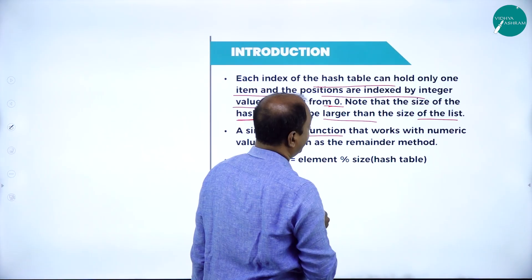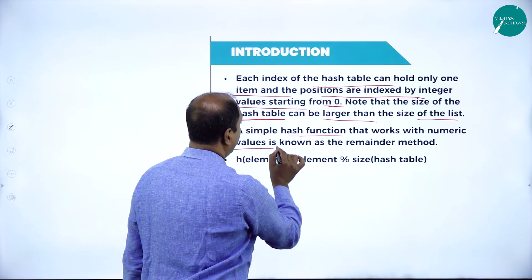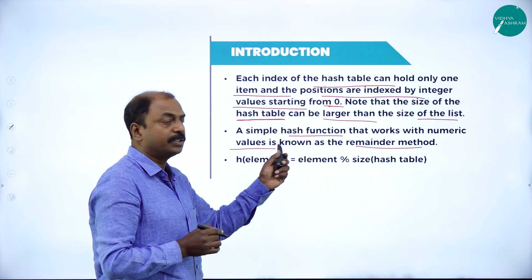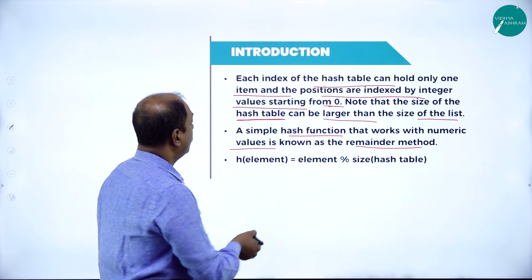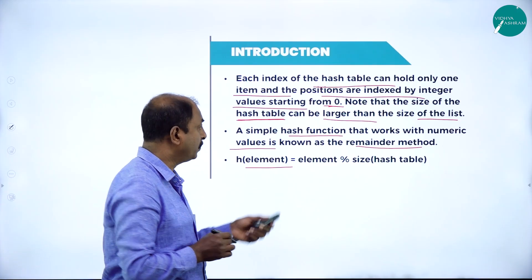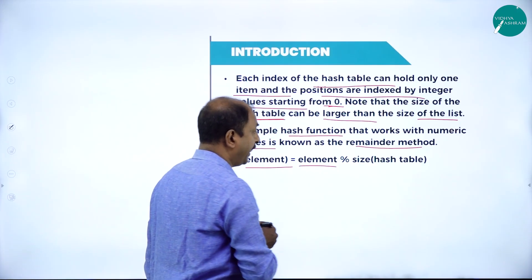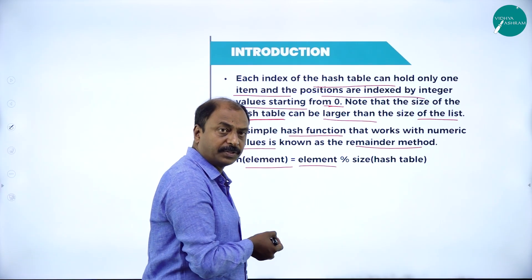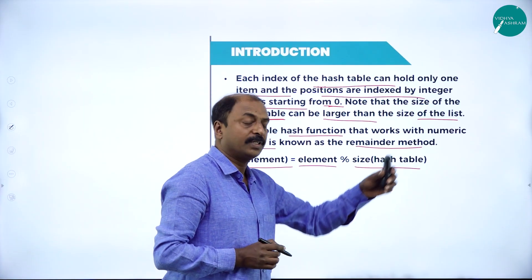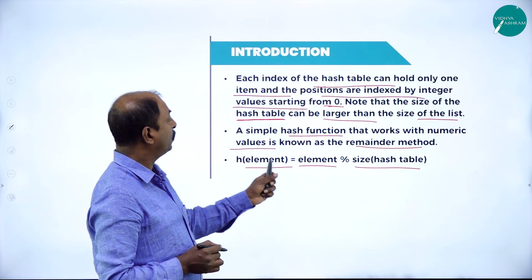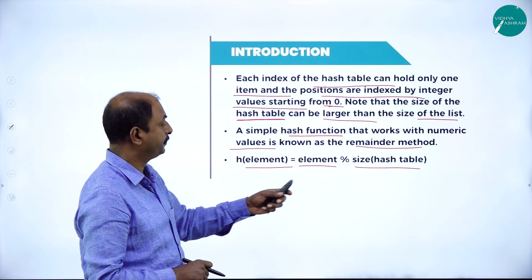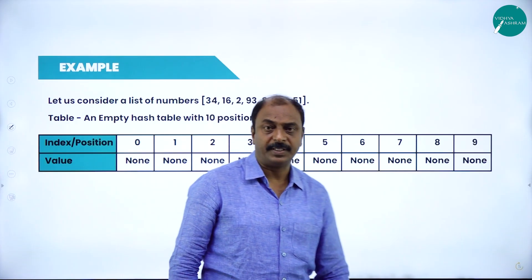A simple hash function that works with numeric values is known as the remainder method. Here we are using integers. The hash value is found by taking the given element in the given list, percentage (modulus), meaning we find the remainder of the division by the size of the hash table. This is how to find out the hash value of a given element in the given list. In the next slide, let us see an example.